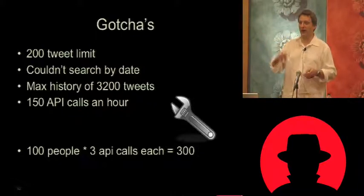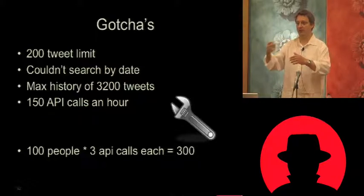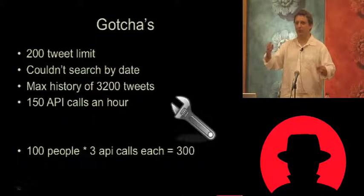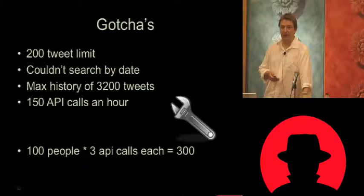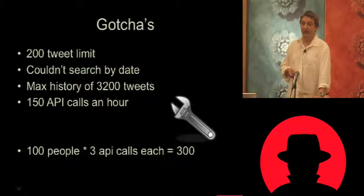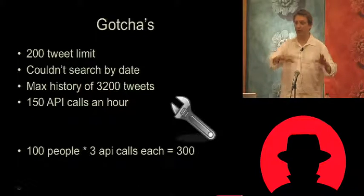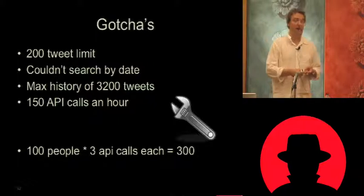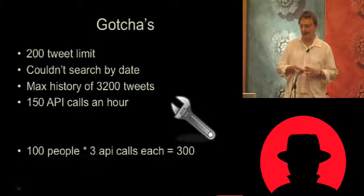I had to derive dates by looking at tweet IDs. Each tweet has an ID with an associated timestamp, so you pull a tweet with an ID, look at the time, and figure out which range you're in. There's also a maximum history of 3,200 tweets. And you're limited to 150 API calls per hour by default. If you've got 100 people in a graph — quite easy when exploring vast data sets — and you're running transforms on all of them, at three API calls per person that's 300 API calls, already over my limit, so I'd have to spread that over two hours.